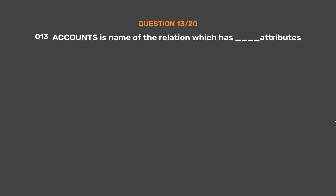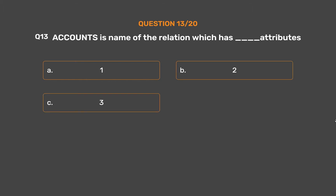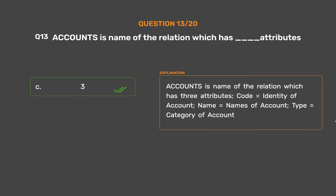Question number 13. Accounts is the name of the relation which has three attributes. The correct answer is Option C: three attributes — code equals identity of account, name equals names of account, type equals category of account.